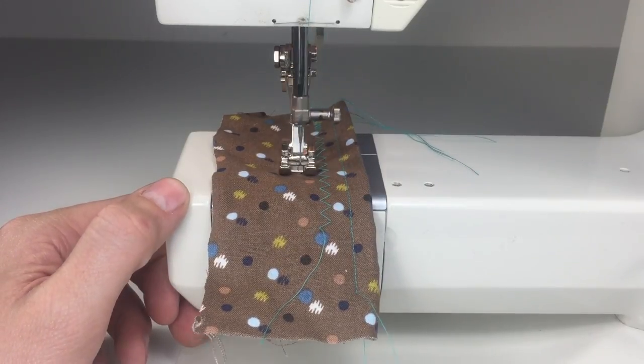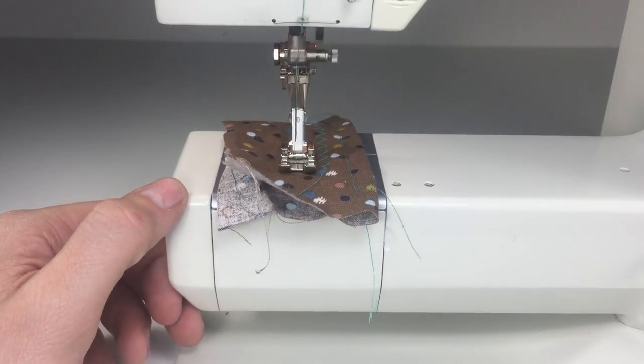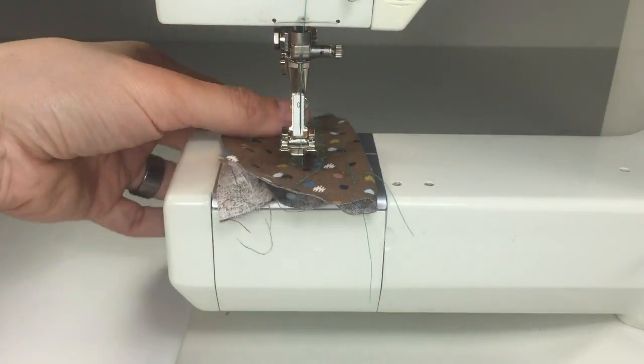Lastly, I'm going to test with the forward and reverse stitch. This is going to show us that A, our reverse mechanism is working properly, and B, that our stitches are balanced.